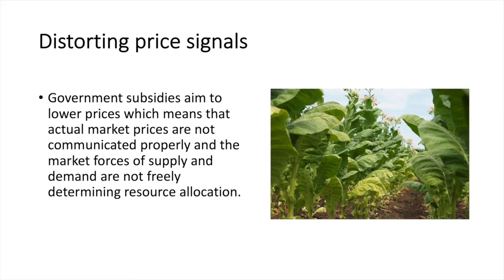Distorting price signals is another cause of government failure. Government subsidies tend to result in lower prices, which means that actual market prices are not communicated properly and that the market forces of supply and demand are not freely determining resource allocation. For example,